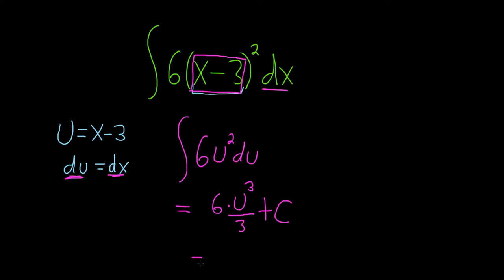The last thing to do is simplify a little bit. So 3 goes into 6 two times. So we get 2. And then u was x minus 3. This will be x minus 3, parentheses cubed. And then we have our constant of integration, capital C.